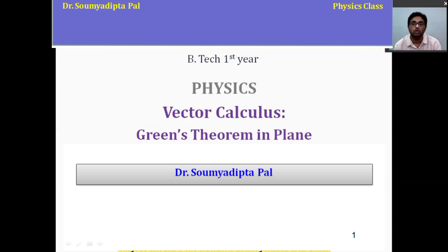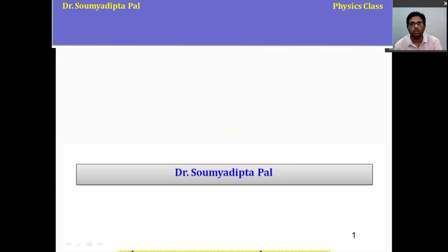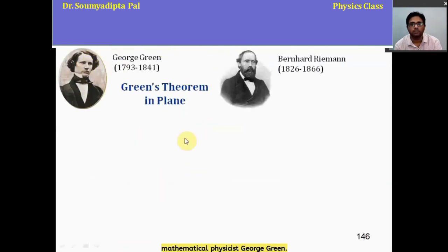Let's start. The theorem is actually named after British mathematical physicist George Green, but its first proof was due to German mathematician Bernhard Riemann. So this was the brief history of Green's theorem. Now let's understand the theorem.